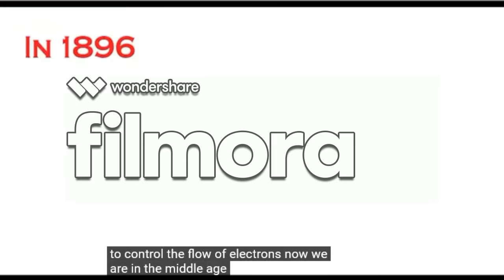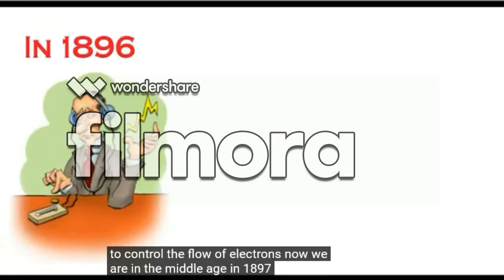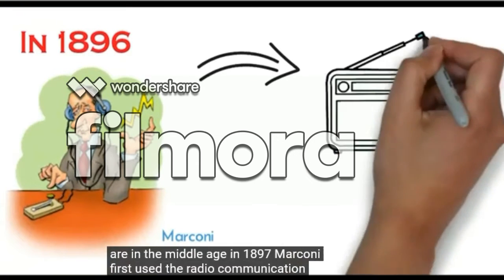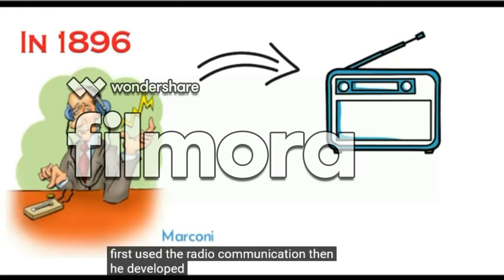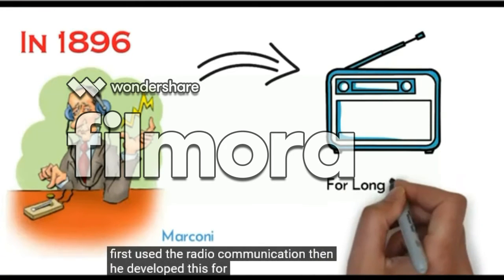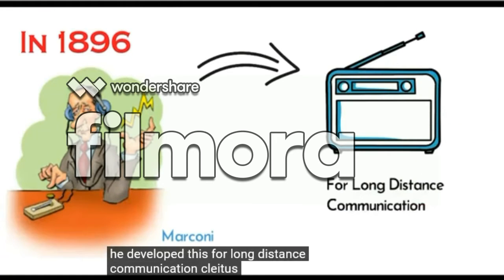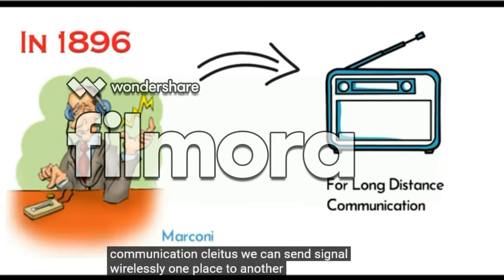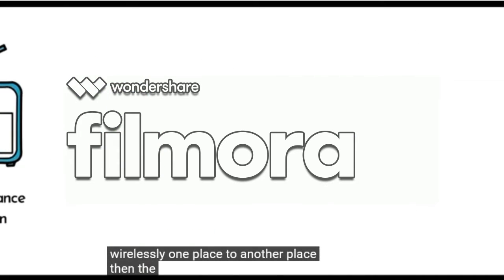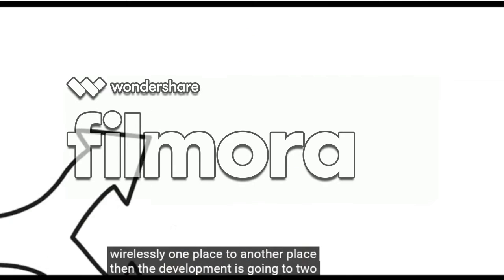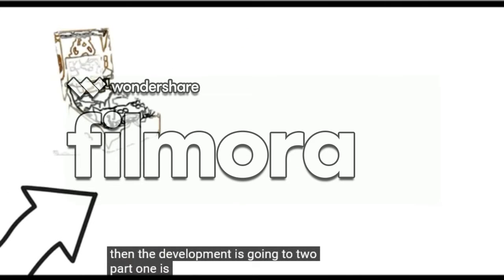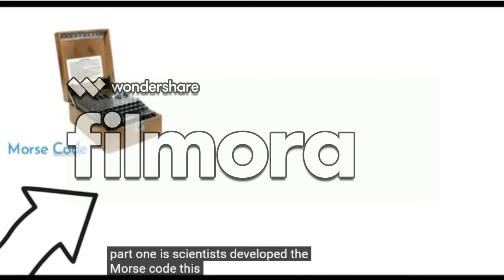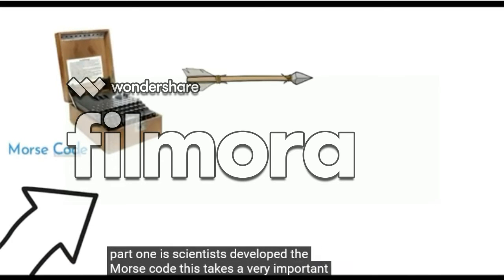Now we are in the middle age of electronics. In 1897, Marconi first used radio communication, then he developed this for long-distance communication. By this, we can send signals wirelessly from one place to another place.